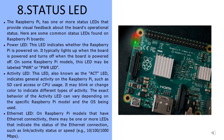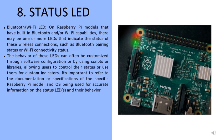On Raspberry Pi models with ethernet connectivity, there may be one or more LEDs that indicate the status of the ethernet connection, such as link/activity status or speed. On models with built-in Bluetooth or Wi-Fi, there may be LEDs indicating the status of these wireless connections, such as Bluetooth pairing status or Wi-Fi connectivity. The behavior of these LEDs can often be customized through software configuration or scripts, allowing users to control their status or use them as custom indicators.